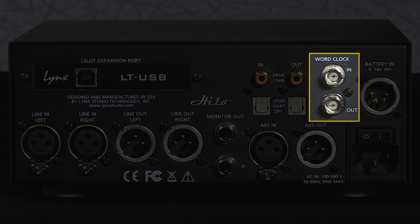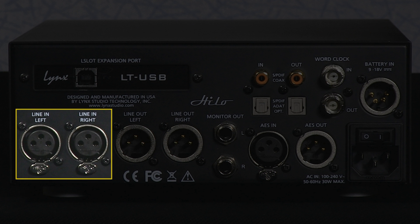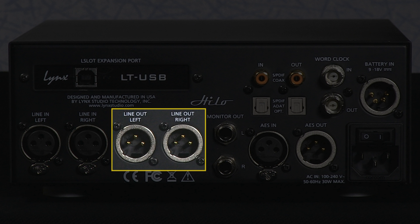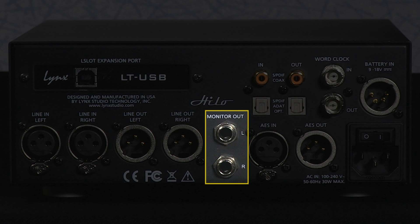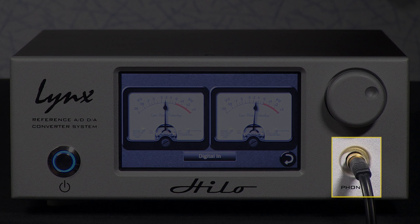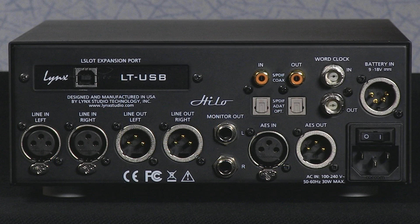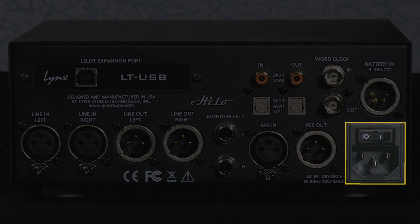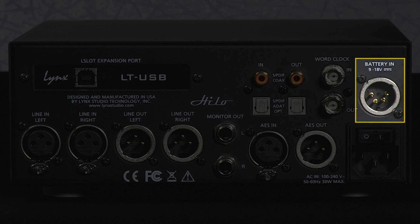Analog jacks include XLR line inputs, XLR line outputs, and a headphone jack on the front of the unit. The Helo can be powered by the included IEC power cord or it can be run off a battery for sessions where a power outlet is not available.